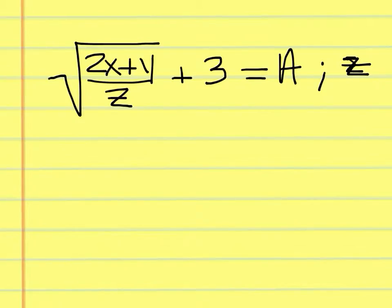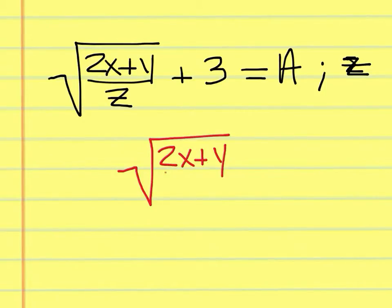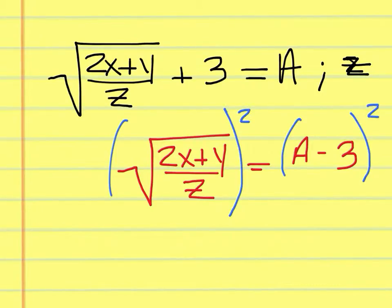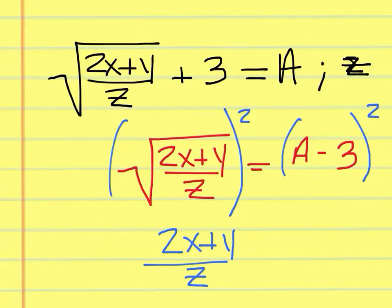To get z by itself, we go in reverse order. We find where z is at, and whatever is around it in reverse order — such as addition and subtraction — we take care of that first. We have plus 3, so we're going to move the plus 3 over to the other side, keeping the square root of 2x plus y over z, giving us a minus 3 on the right. Now we can't do anything underneath the square root sign until we actually get rid of it. To get rid of the square root sign, you have to square both sides, leaving you with 2x plus y over z and then the quantity squared of a minus 3.